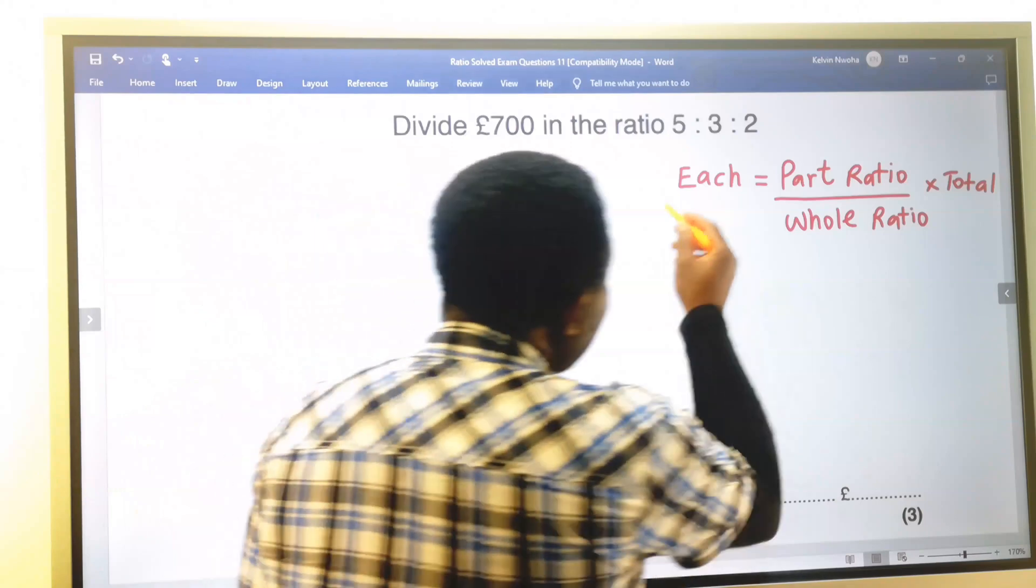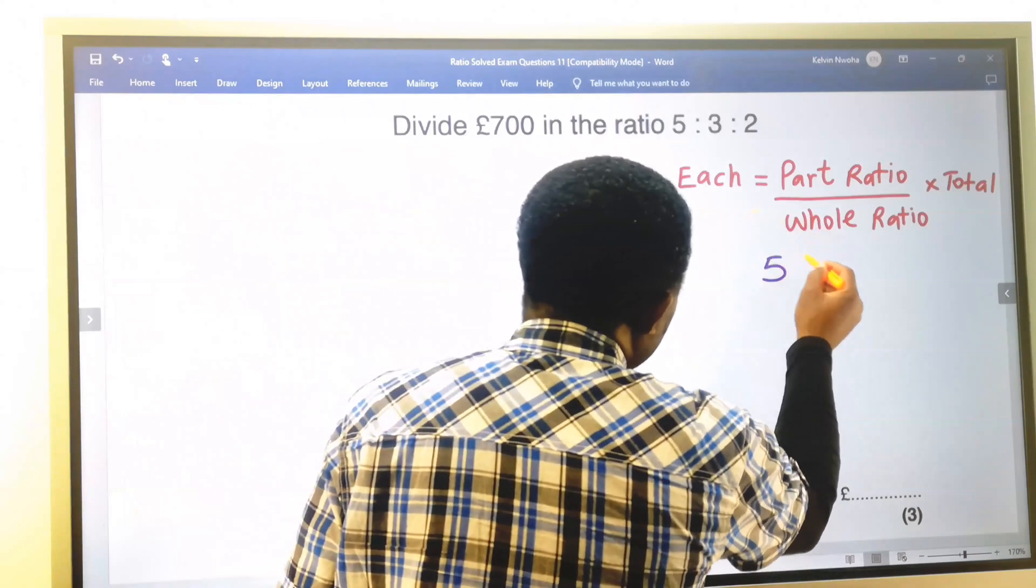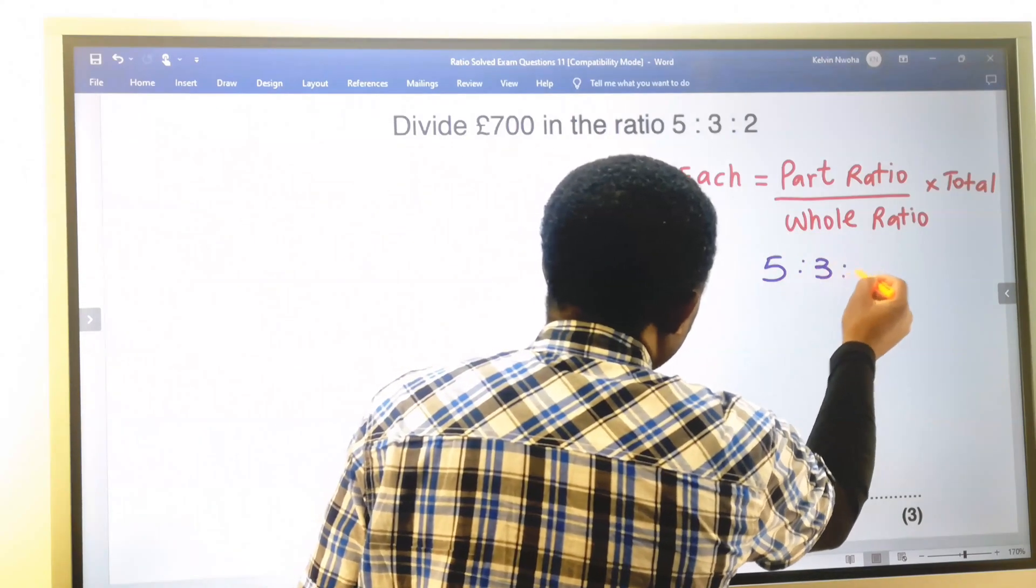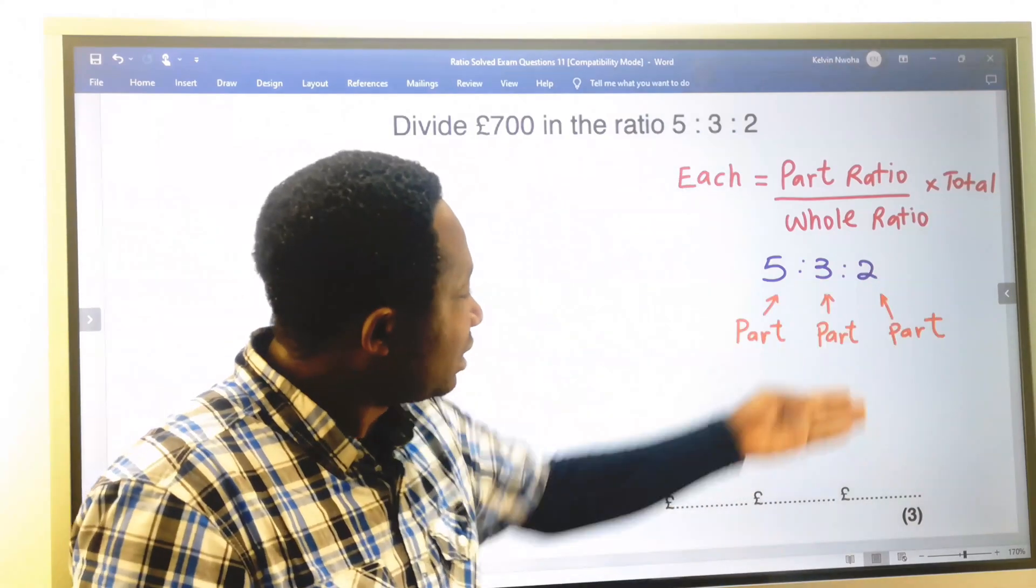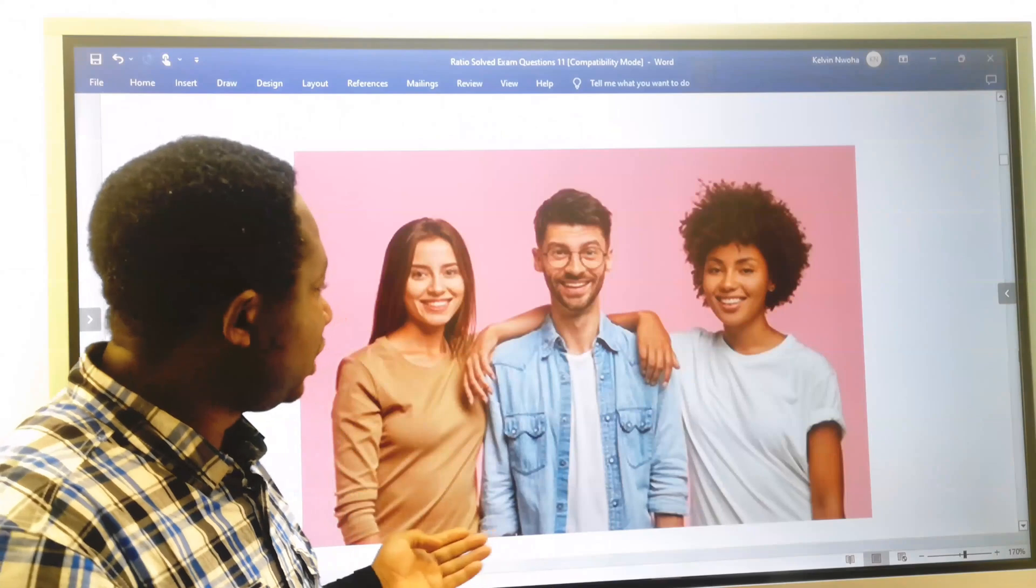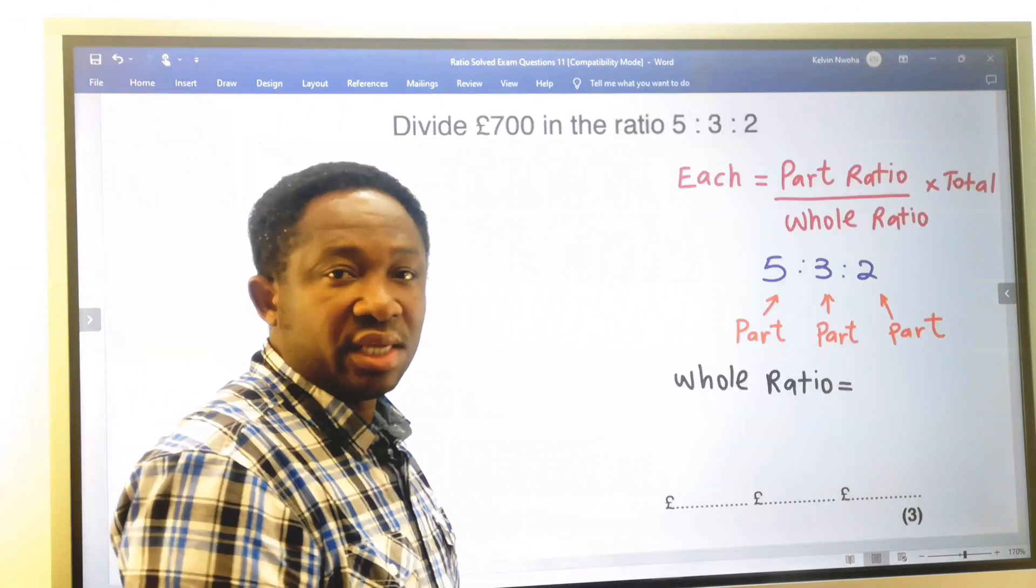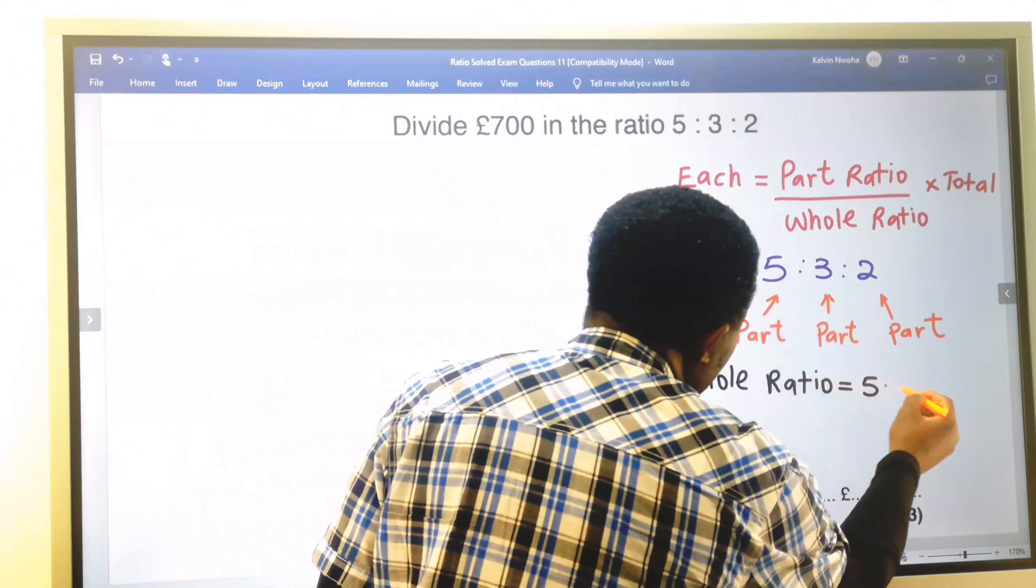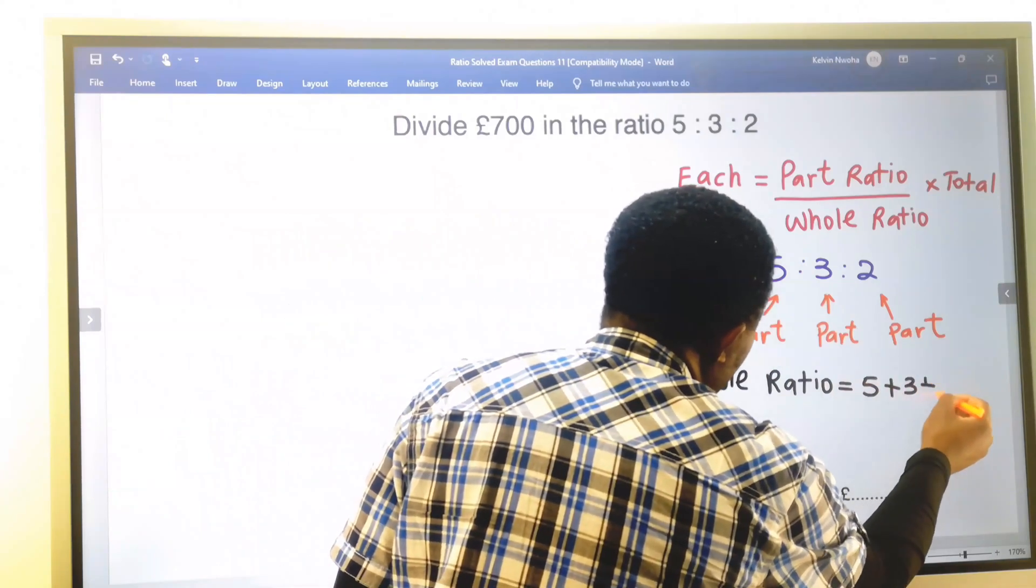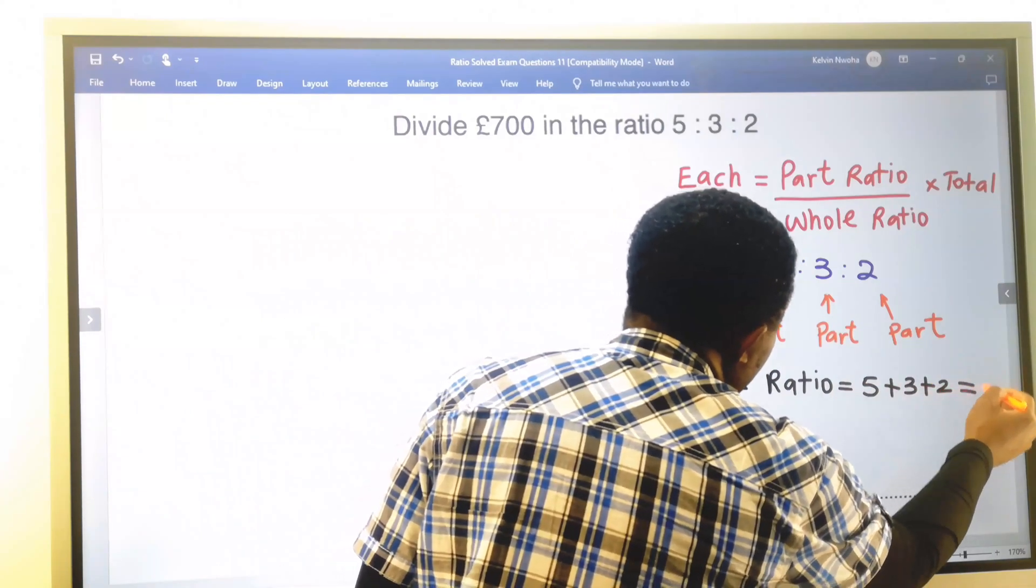Part of the given ratio is 5 to 3 to 2. Each part ratio is for each individual. The whole ratio is 5 plus 3 plus 2, which is 10.